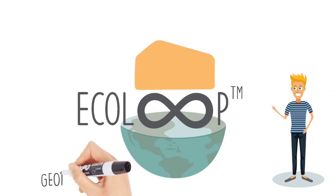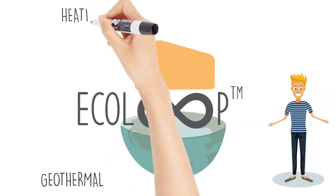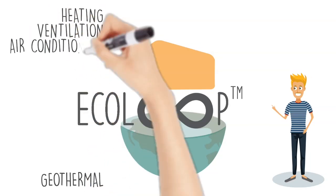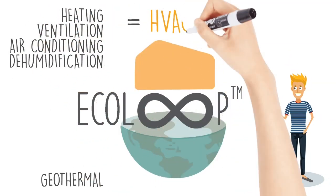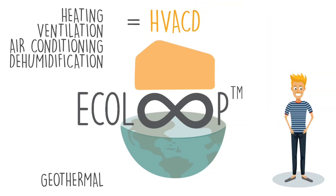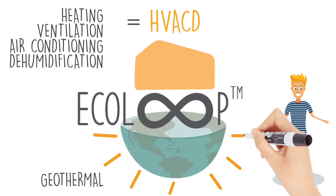To begin, the Ecoloop is an innovative geothermal system that integrates all the features of a heating, ventilation, air conditioning and dehumidification system, also called HVACD. The Ecoloop not only does all of this, but it does it more efficiently than traditional systems, utilizing the energy of the ground.